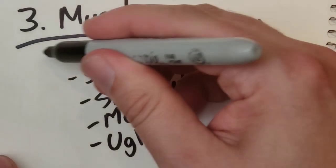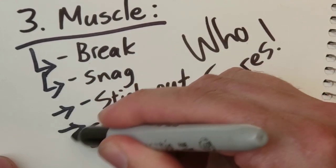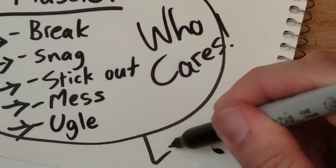Do it. Muscle it. Do this. Break it. Snag it. Make it stick out. Make it a mess. Make it ugly. Don't sell it. Just learn.